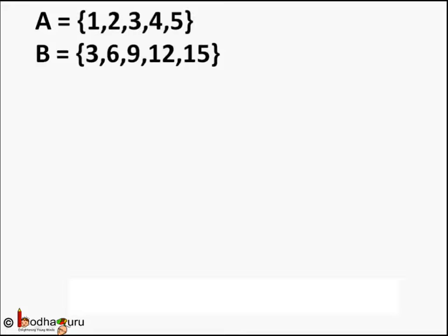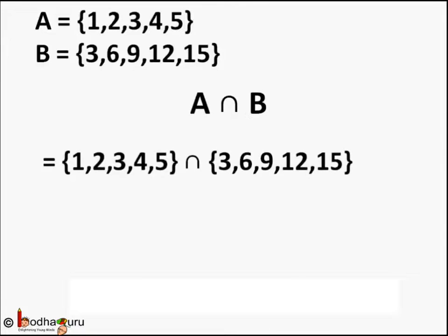Let us take another example. Set A has elements 2, 4, 6, 8 and 10 and set B has elements 3, 6, 9, 12 and 15. So A intersection B would have elements which are common in both the sets. In this case the common number is 3. So A intersection B would only have the element 3.